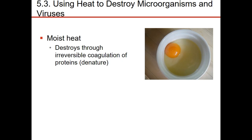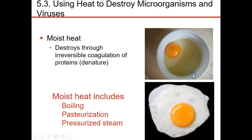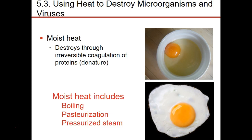Moist heat destroys through irreversible denaturation. Think of an egg — all that clear portion is albumin protein. When we cook an egg, we increase the temperature and change the shape of the protein; that's denaturation, and it's an irreversible process. With moist heat, we have boiling, pasteurization, and pressurized steam — they're all moist heat mechanisms.